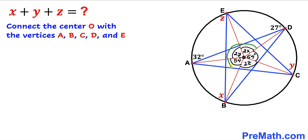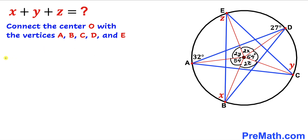We can see that all these central angles together complete a full cycle, which equals 360 degrees. So the sum of all these individual central angles equals 360 degrees. Adding them all up: 54 degrees plus 64 degrees plus 2x plus 2y plus 2z equals 360 degrees.